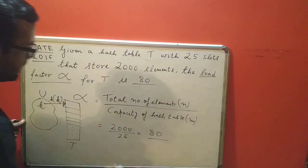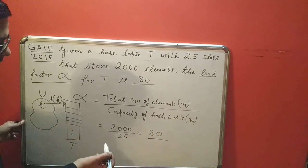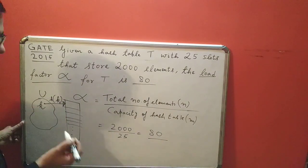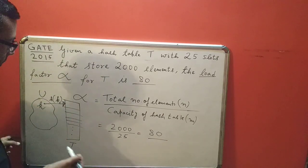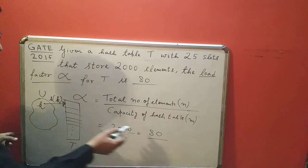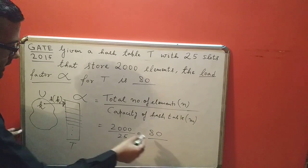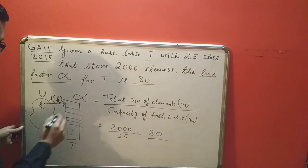Here a value of 80 means if my hash function is uniform, then it will allocate 80 elements to each slot.